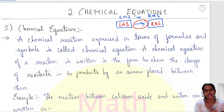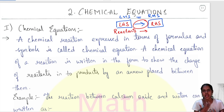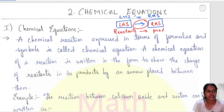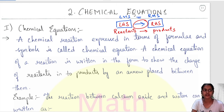On your left hand side, you have something called reactants. These reactants — some chemical reaction happens and then you get something called products. The final output is called products. You have a reactant and these reactants will give you a final output which are nothing but products. So this is called a chemical equation.